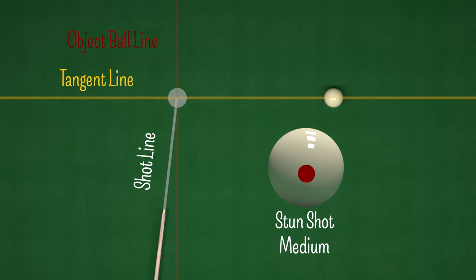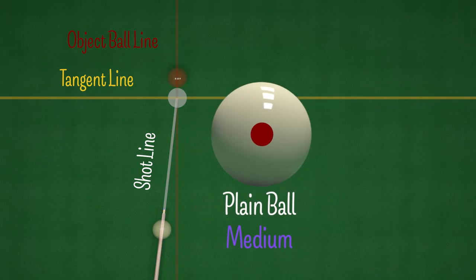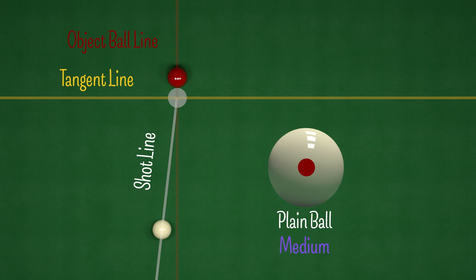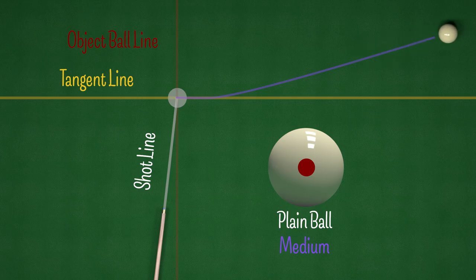What if we play this shot plain ball, striking in the center of the cue ball? When we play this, the cue ball actually has a little bit of forward momentum. As we strike the ball it makes contact with the object ball, heads off down the tangent line, but then as the spin takes hold it pulls the cue ball forward from the tangent line.